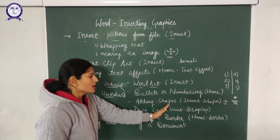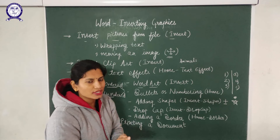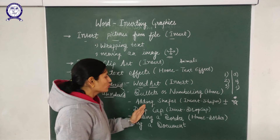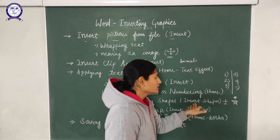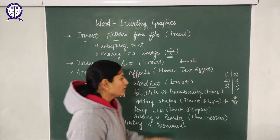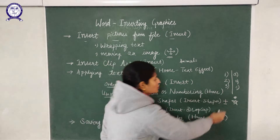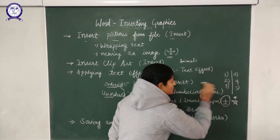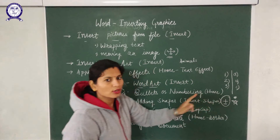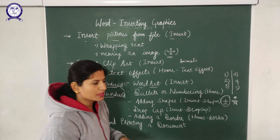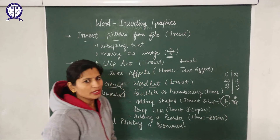Next is adding shapes. In your document, if you want to create a geometrical shape or draw something, you can use this option available under the Insert tab. When you select the shapes option, the mouse pointer changes to a crosshair. Select the location where you want to draw, drag the pointer, and the shape will be drawn there.